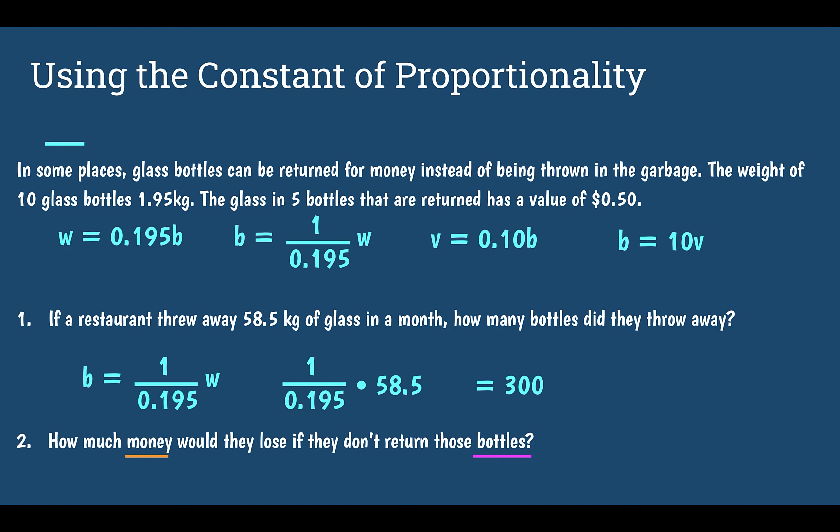So I need something relating money and bottles — V and B. I want to know how much money, so I need to figure out what V equals. I'm going to use the third equation: V equals 10 cents times B.